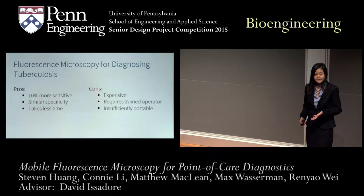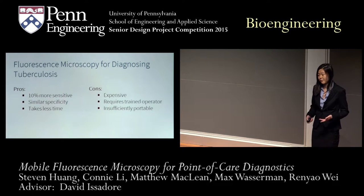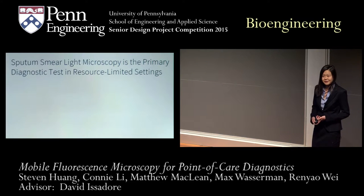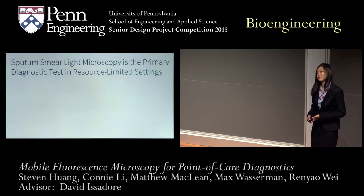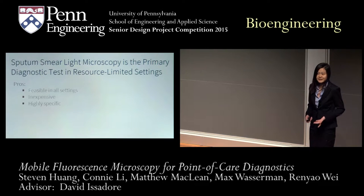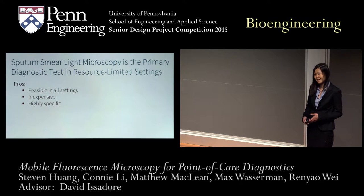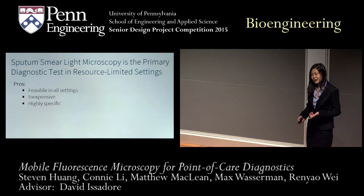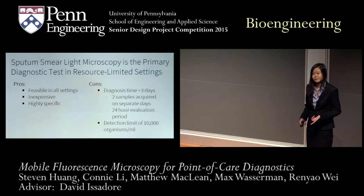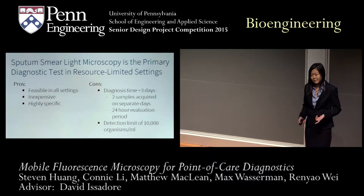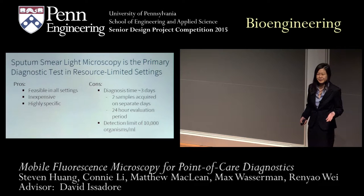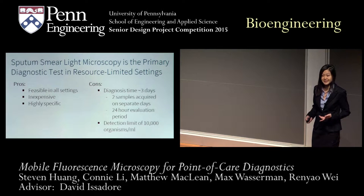In addition, the detection limit of the current technology is 10,000 organisms per milliliter of sputum — anything below that and sensitivity and specificity values are very low. A superior alternative is fluorescence microscopy, which is 10% more sensitive at diagnosing tuberculosis, has the same high specificity values, and only takes one day. However, one unit costs $10,000, requires a trained operator, and is insufficiently portable, making it infeasible in the settings where most tuberculosis cases occur.